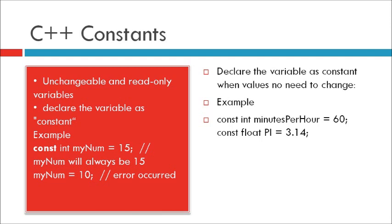For example, const float PI equals 3.14, that will never ever change.